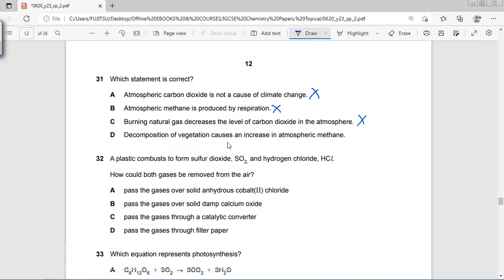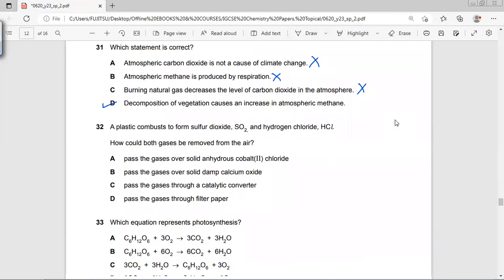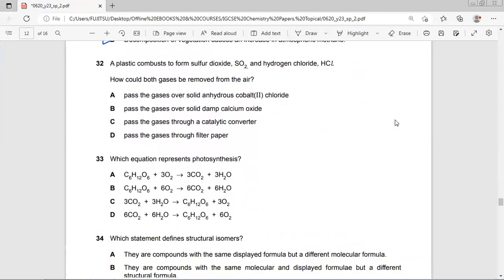Decomposition of vegetation causes an increase in atmospheric methane? Yes, it does, especially animal-based and plant-based anaerobic decomposition that causes the methane release. And methane is a more dangerous climate change gas, global warming gas.